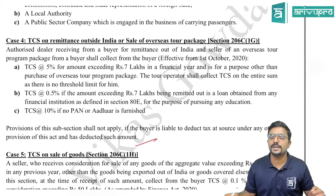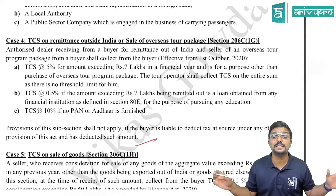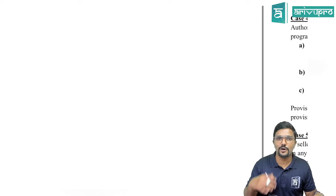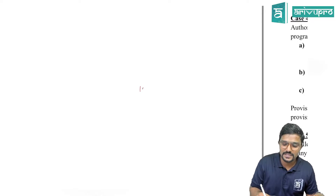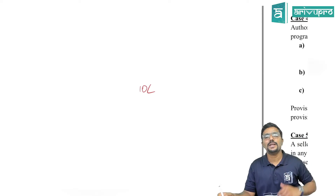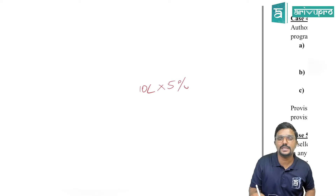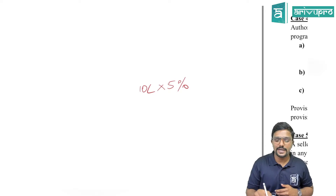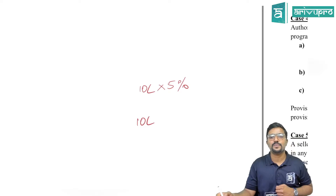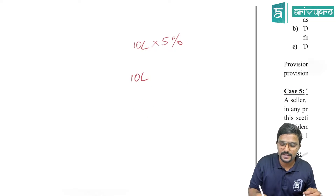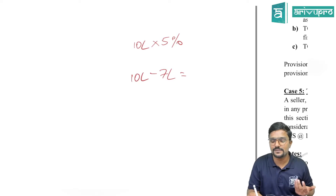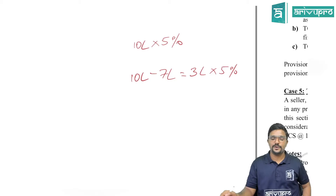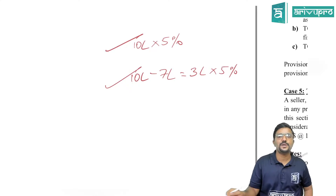For an overseas tour package, the tour operator shall collect TCS on the entire sum — there is no threshold limit. For example, Thomas Cook charging 10 lakh for an overseas tour — 5% TCS on 10 lakh. Whereas for an authorized dealer exchanging 10 lakh worth of currency, TCS applies only on the amount in excess of 7 lakh — that is 3 lakh at 5%. TCS at 0.5% applies if the amount exceeding 7 lakh being remitted is a loan obtained from any financial institution under Section 80E for the purpose of pursuing education.